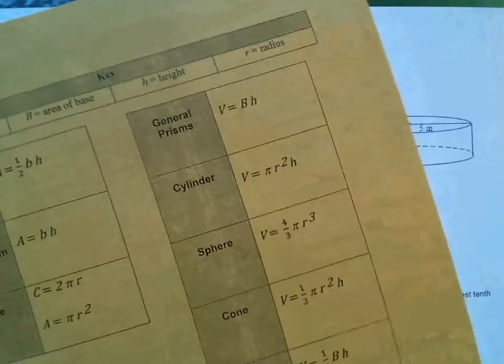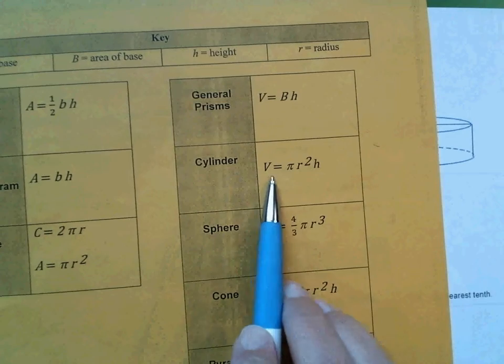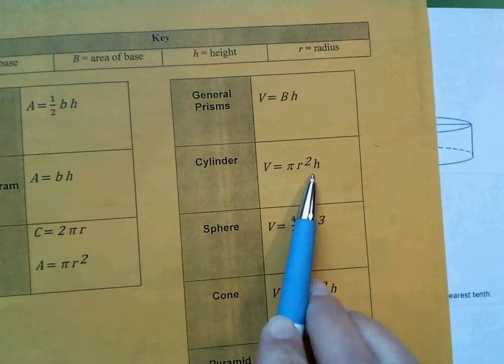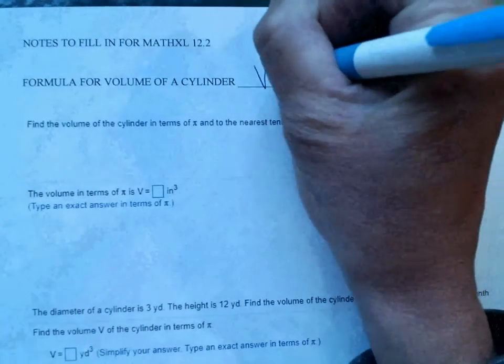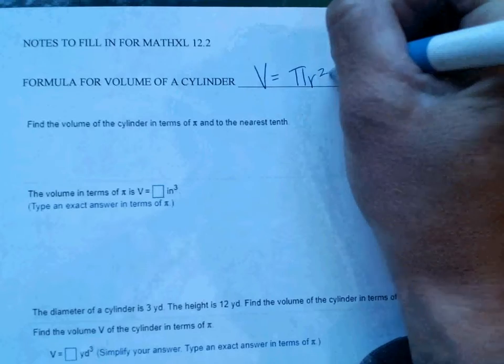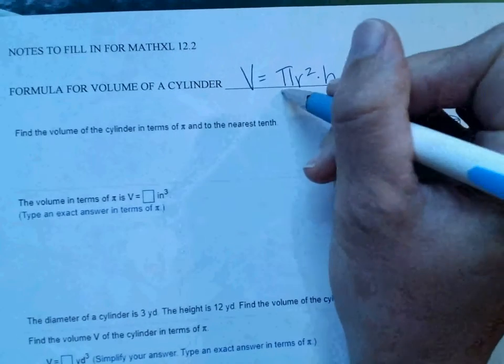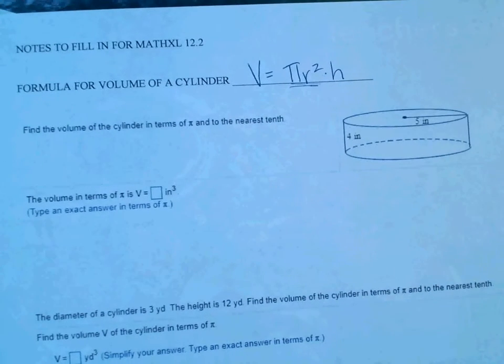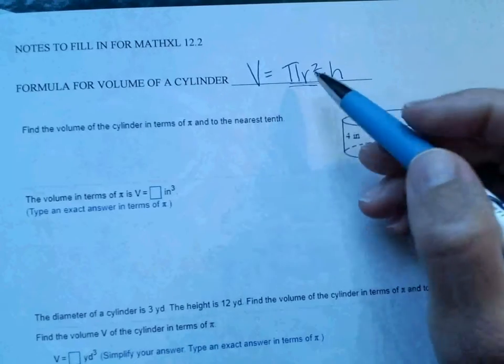The volume of a cylinder is equal to pi r squared times the height. So volume equals pi r squared times the height. Hopefully you recognize pi r squared as your area of your circle. So this is an area of a circle times the height.